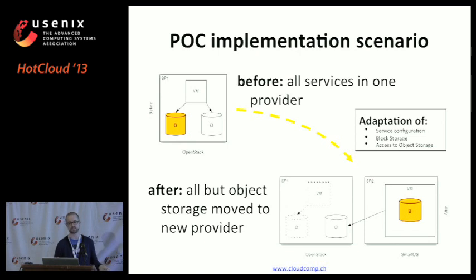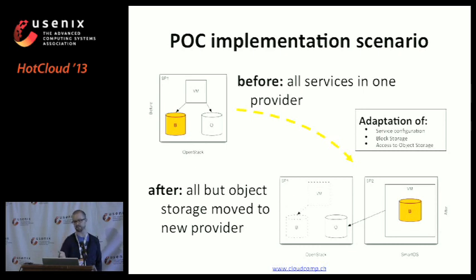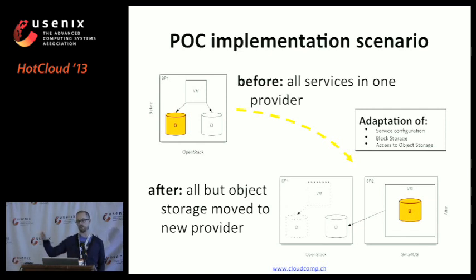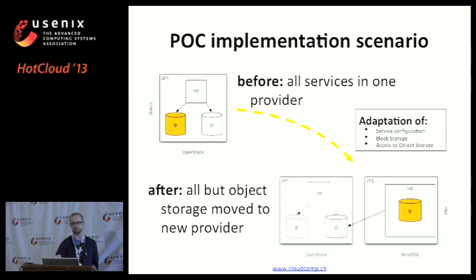Looking at more details of the scenario - the original had all services hosted within one provider. The services were compute represented as a virtual machine, block storage (Nova Volume back then, now known as Cinder), and object storage provided by Swift. Through the use of Fluid Cloud, we wanted to partially move the service: move the compute over to SmartOS and move the block storage over to SmartOS. This required modification of the service configuration, because on SmartOS and SDC you don't get block storage services, so an adaptation was required there. Access to object storage required no changes.